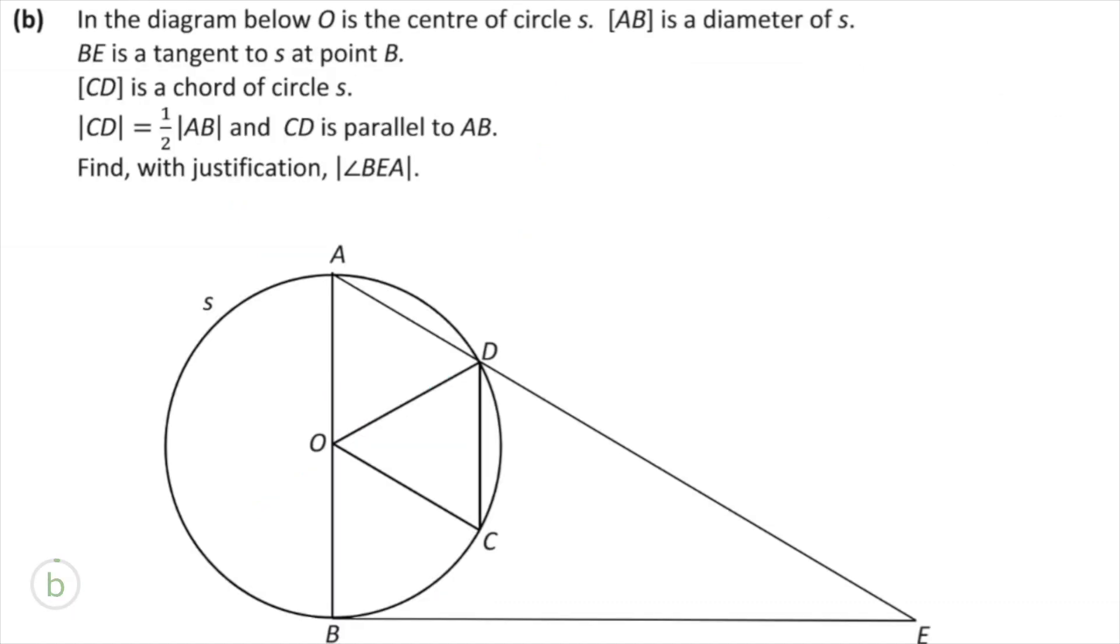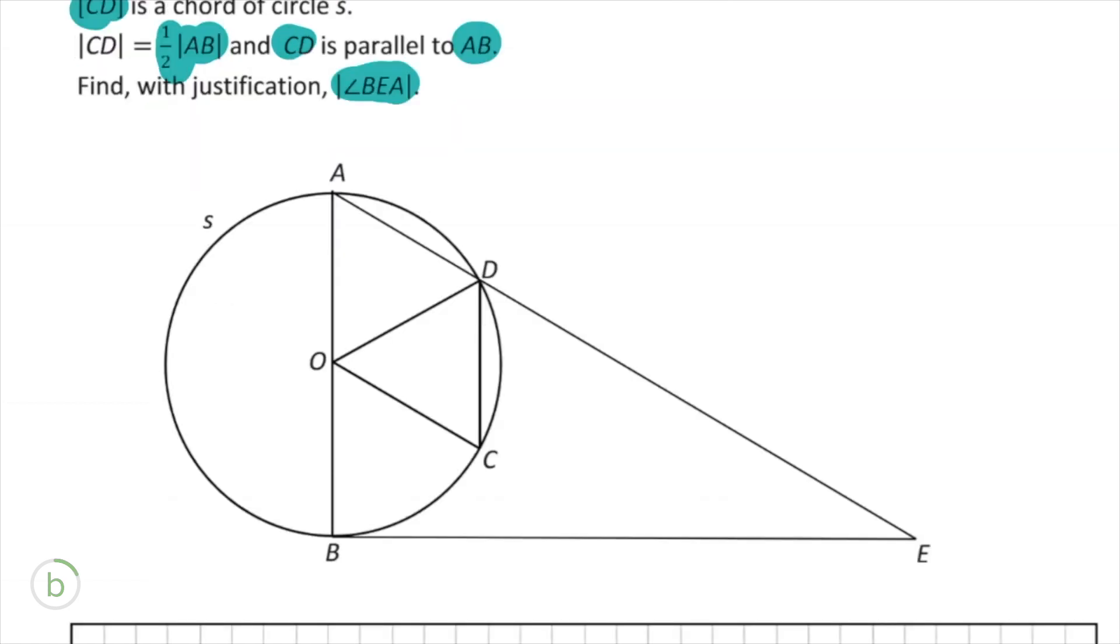Part B gives us O, which is the center of the circle S. AB is the diameter, OB is a tangent, CD is a chord, and CD is equal to half AB, which I'm sure will be important. And these two lines are also parallel. So we've got to show, in sort of like a proof kind of way, that the angle BEA is equal to some degrees or radians. So we've got to find exactly what it is. So we're looking for this angle out here, we're just going to call that X.